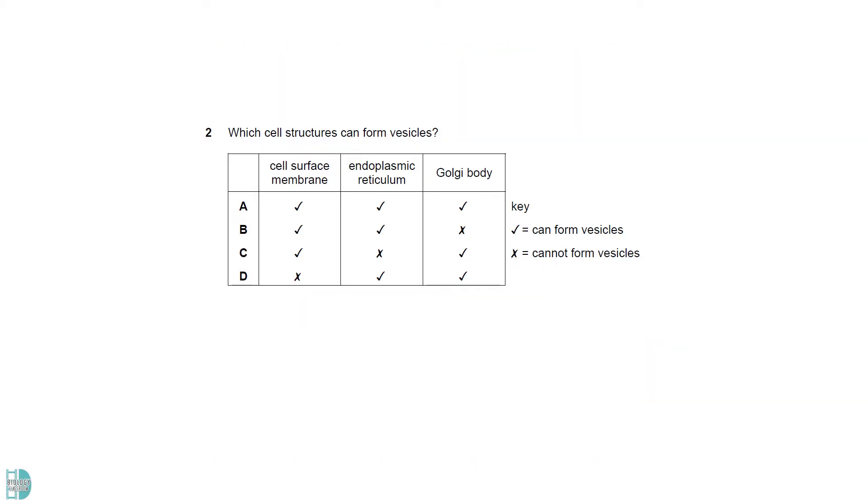Cell surface membranes can form vesicles during endocytosis. Endoplasmic reticulum forms vesicles to transport polypeptides to the Golgi body. Golgi body can form secretory vesicles for exocytosis.